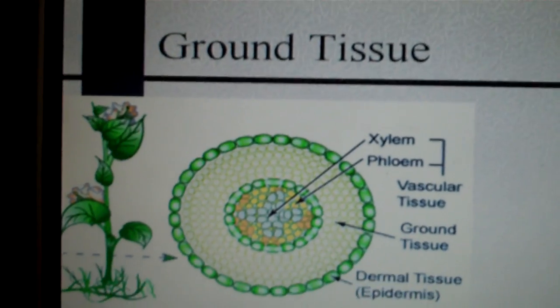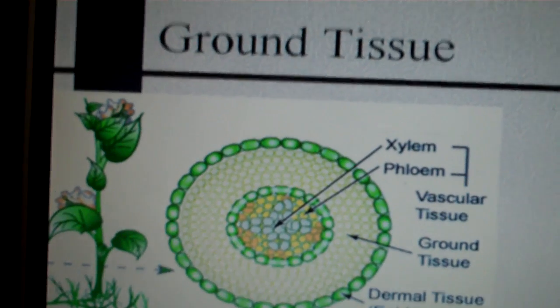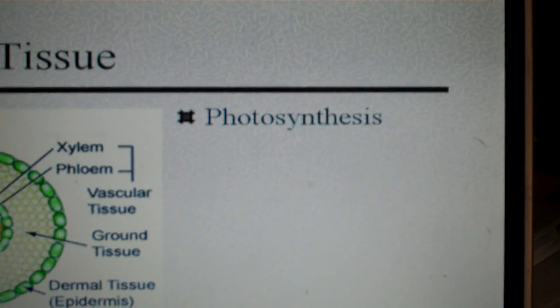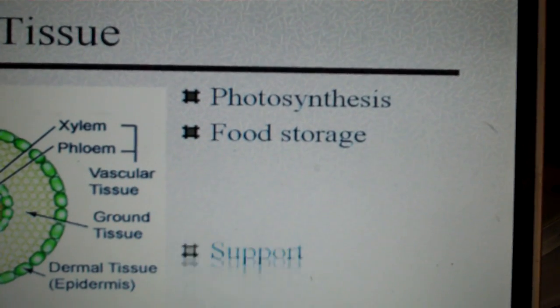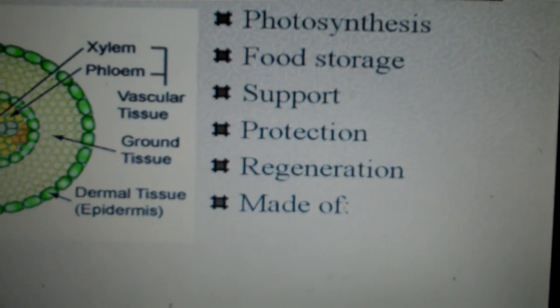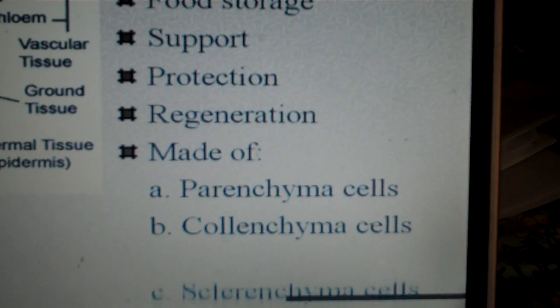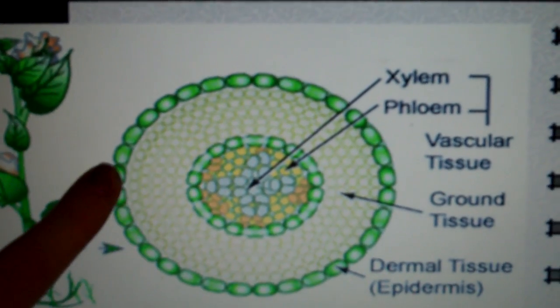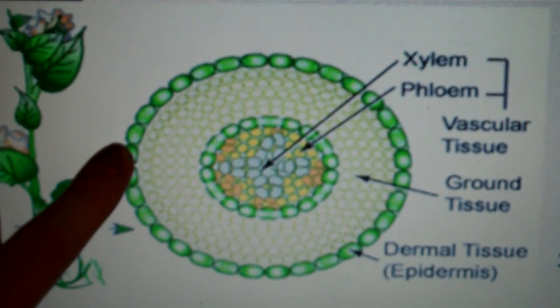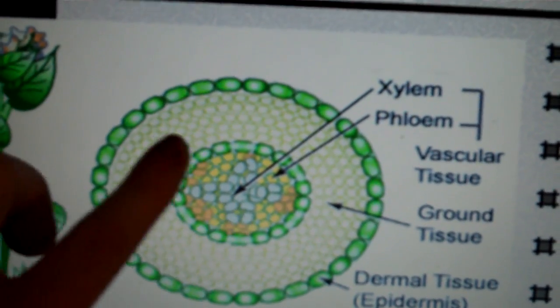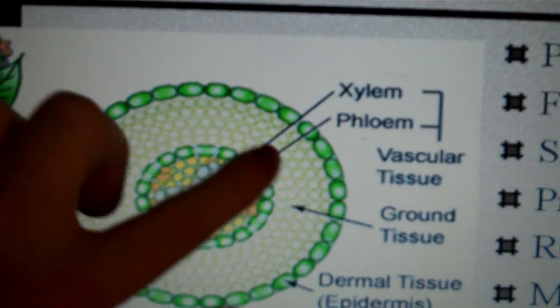And the third type of tissue is ground tissue. Ground tissue is pretty important for the plant. It is where photosynthesis occurs, food storage, support for the plant, protection, regeneration, and it's made of parenchyma cells, collenchyma cells, and sclerenchyma cells. If we look at this picture here, this is a cross section of a plant. On the outside we have the dermal tissue, the epidermis. The inside we have our vascular tissue, the xylem and the phloem. And between the area we have the ground tissue.